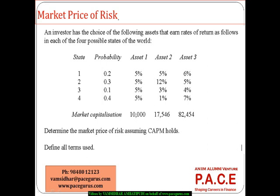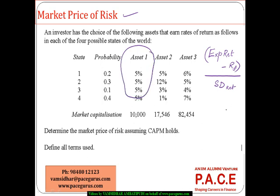Now let's look at the computation of the market price of risk. The market price of risk is defined as the expected return minus the risk-free rate of return, divided by the standard deviation of the return. Whether I am using a portfolio or a security, when looking at the market price of risk, I use expected return minus the risk-free rate divided by the standard deviation.